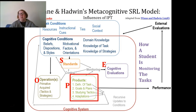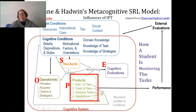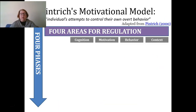It's all influenced by external evaluations — how other people are evaluating our tasks as well. You can see how all of these things are interconnected: our task conditions, cognitive conditions, and products all relate to each other. Pintrich's motivational model looks at four phases of motivation across four areas of regulation. The first is forethought, planning, and activation.